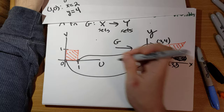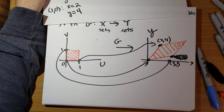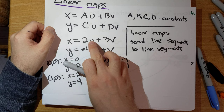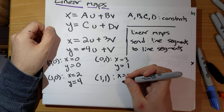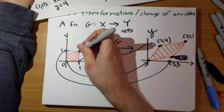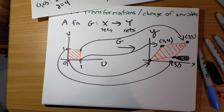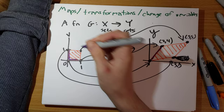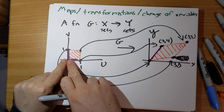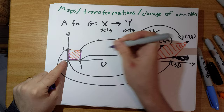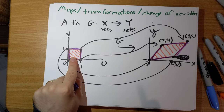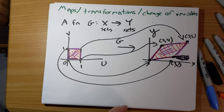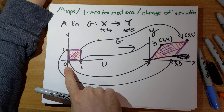And finally, (1, 1): x is 2 times 1 plus 3 times 1, which is 5; y is 4 times 1 plus 1, which is also 5. So (1, 1) gets sent to (5, 5). Because linear maps send line segments to line segments, each side of the unit square maps to a side of the resulting shape, and the interior of the square gets sent to the interior of this parallelogram.